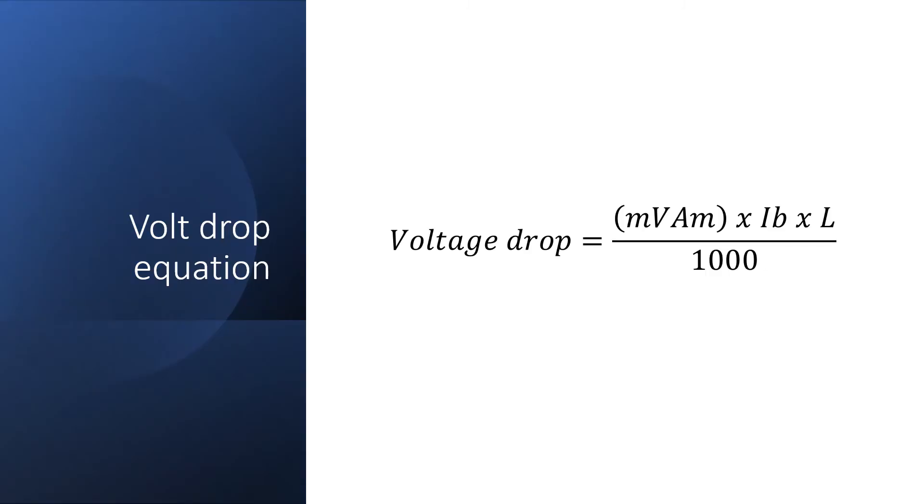So here we have the standard volt drop equation. We take the value for millivolts per ampere per meter, multiply by the design current and the circuit length, and then divide by 1000.